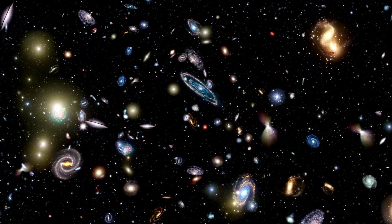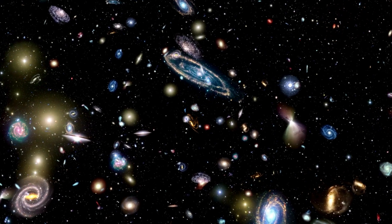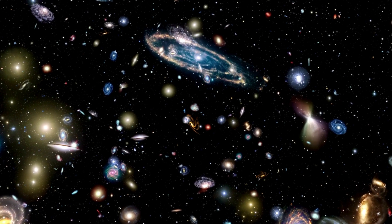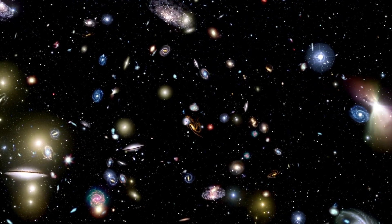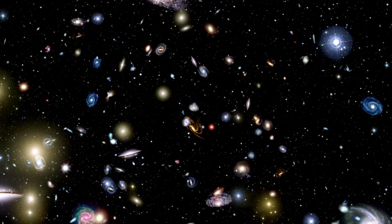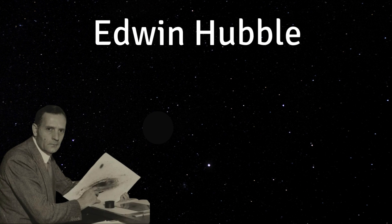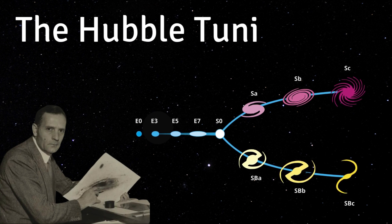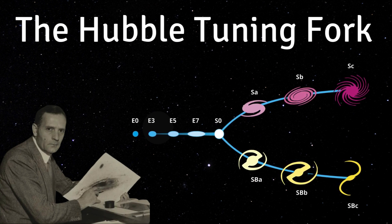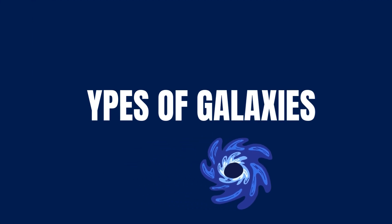There are so many galaxies, and to make sense of them, scientists group them into categories. This helps us to understand how galaxies form and change. In 1936, Edwin Hubble created one of the first systems for classifying galaxies, called the Hubble Tuning Fork Diagram, where he divided galaxies into three main types based on their shapes.